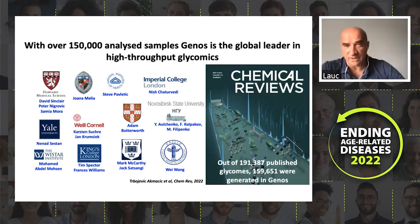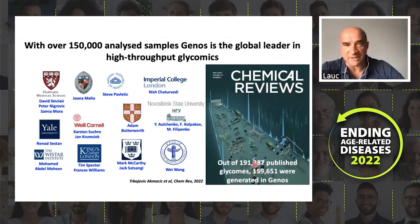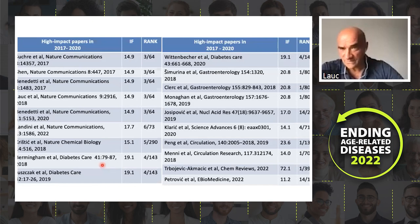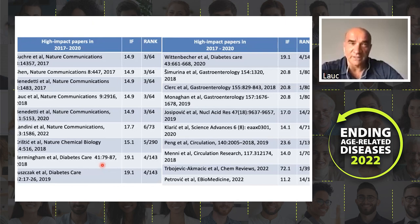Today, we have generated approximately 80% of the global high-throughput glycomic output. There are over 190,000 published glycomes, reviewed in a Chemler's review paper a couple of weeks ago, and we generated nearly 160,000 of these glycomes. Since we did it in collaboration with some of the best researchers, we were able to publish in high quality journals, including Cell Reviews, Gastroenterology, Circulation, and so on. So there is a lot of hard science about glycans.